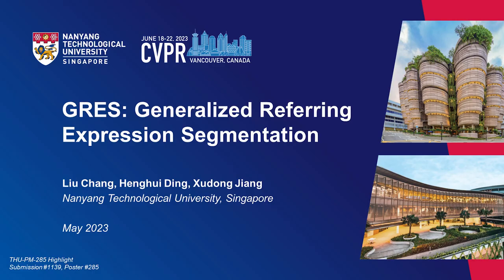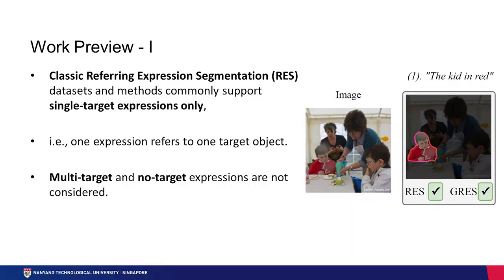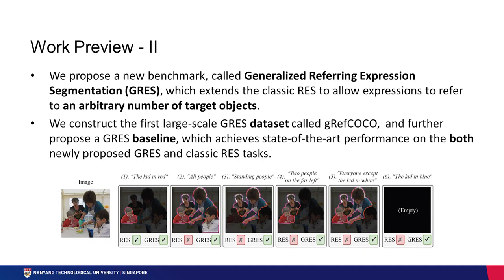Welcome to our presentation of the paper GRES: Generalized Referring Expression Segmentation. I am Lu Chang from Nanyang Technological University, Singapore. Our work is based on the fundamental multi-modal task of referring expression segmentation (RES). For classic RES, one limitation is that it supports single target expressions only, leaving multi-target and no-target expressions unconsidered. We introduce a new benchmark called Generalized Referring Expression Segmentation (GRES), which expands classic RES by allowing expressions to refer to an arbitrary number of target objects. We create a GRES dataset named GREF-COCO and propose a baseline method that achieves state-of-the-art performance on both GRES and classic RES.